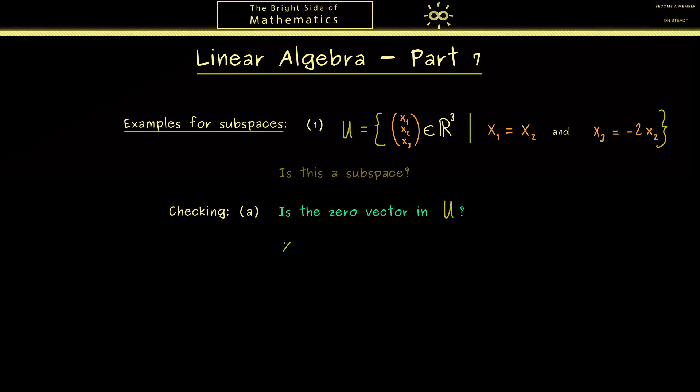Therefore let's take the zero vector and check if all the equations on the right hand side are fulfilled for it. So we need that x₁, x₂, and x₃ are all zero. Then obviously we can immediately conclude that x₁ is equal to x₂. The first equation is satisfied. Now to check the second equation we immediately see that minus 2x₂ is also zero, and therefore it's simply equal to x₃. So the second equation is also fulfilled.